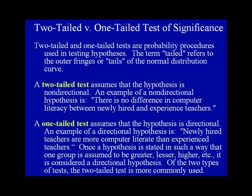Once a hypothesis is stated in such a way that one group is assumed to be greater, lesser, higher, etc., it is considered a directional hypothesis. Of the two types of tests, a two-tailed test is more commonly used.